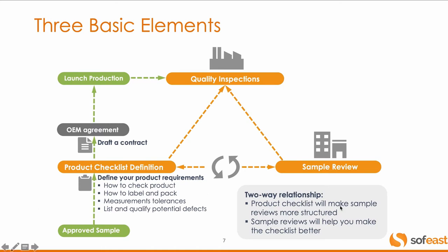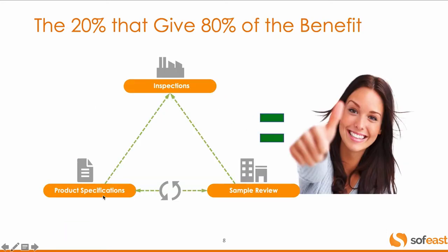What I want to introduce here is this framework — it's like a triangle. The three main points are: product specifications which becomes a QC checklist; sample reviews before and during production; and inspections at the factory. This is the 20% that will cover 80% of what you need if you do this the right way.